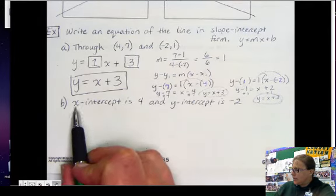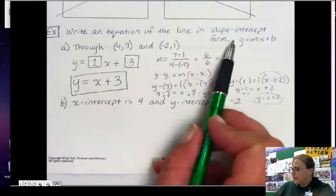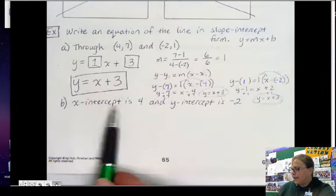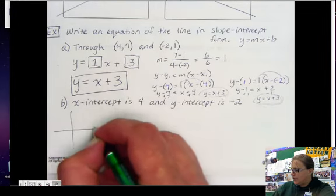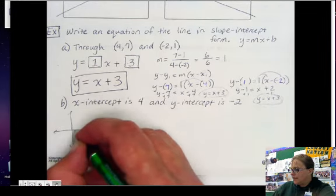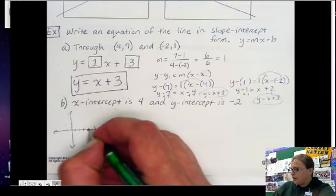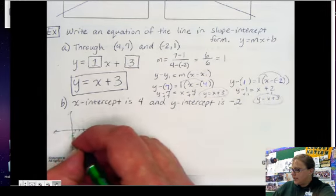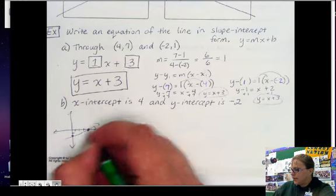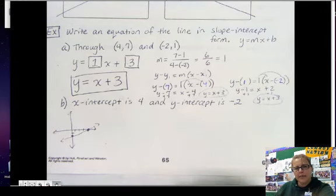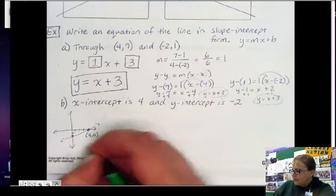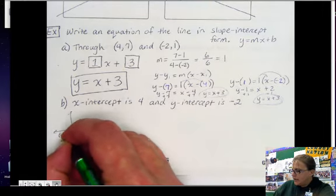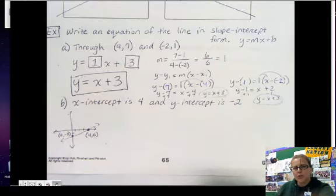Now let's do this next one. We want to write an equation in line in slope-intercept form where the x-intercept is 4. So if the x-intercept is 4, if we were to draw this, we would have x-intercept starting at 4, and y-intercept is at negative 2. And so that's my line right there. So what point is that? This is at 4, 0. And this is at 0, negative 2. So there's my two points.